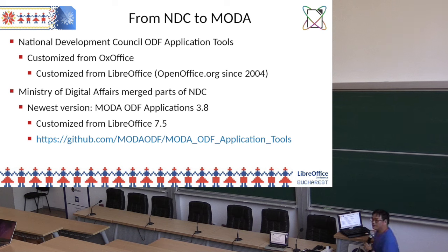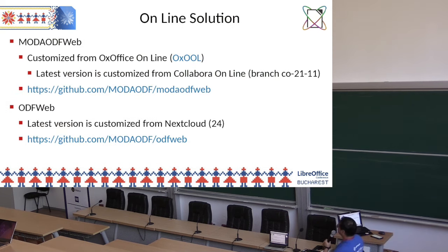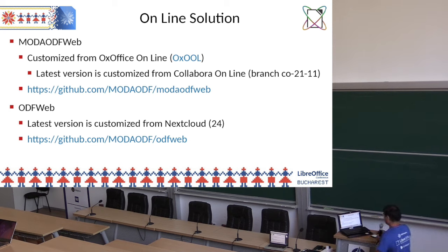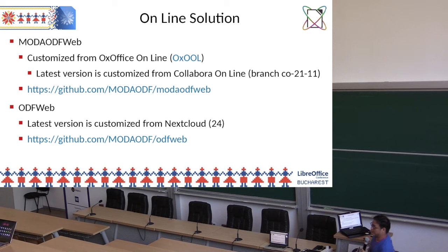The newest version this year is customized from LibreOffice 7.2.5, and the source code is here. Everything they customize, the source code is open. Besides the desktop version, there's also an online version. Especially after the pandemic started, this request is a lot more. We also have a MODA version online, basically customized from the developer OX Office Online, and also customized from Collabora Online. The source is still open.